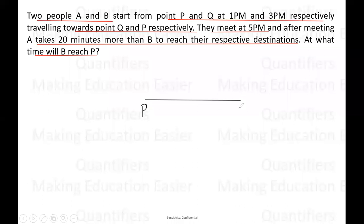So let's say this is point P, this is point Q. A is starting from point P at 1 PM. B is starting from point Q at 3 PM. Now they meet at 5 PM. And after the meeting A is taking 20 minutes more than B. Now students, first of all, this particular type of question where two people are starting at different times and after meeting they are taking different times - I'll repeat, two people starting at different times and after meeting also they are taking different times - in such type of questions, students, there are no shortcuts. So I'll tell you how to solve such questions.